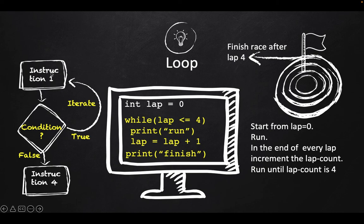And once that condition is false, it is breaking the loop and executing some other programming instruction. This is similar to an example of a track and field competition where a competitor starts from lap zero and then continues running every lap.